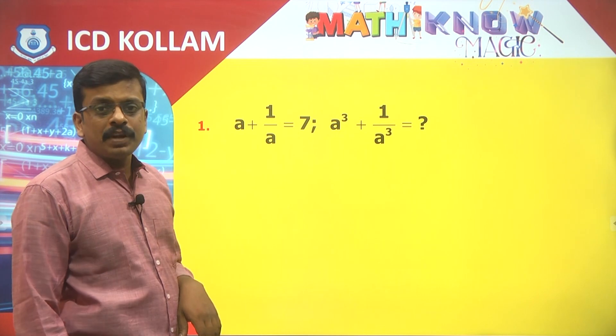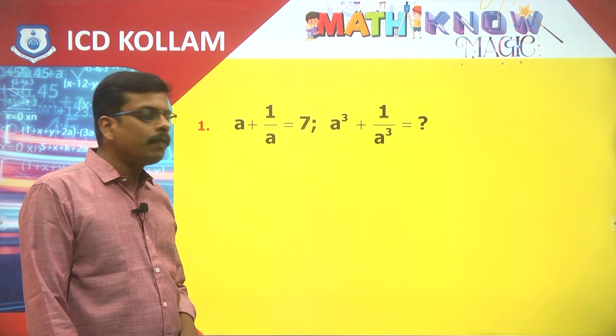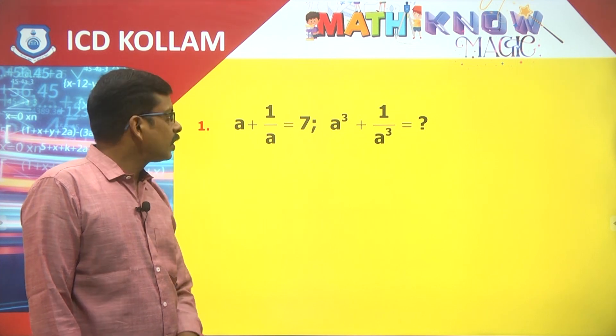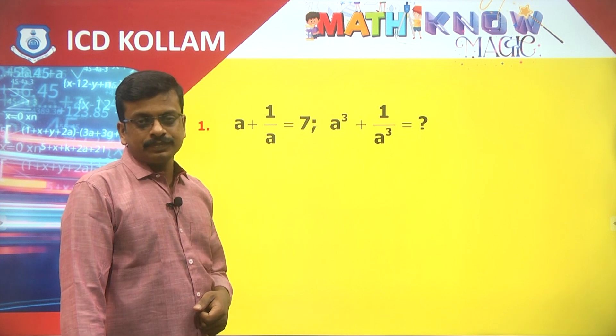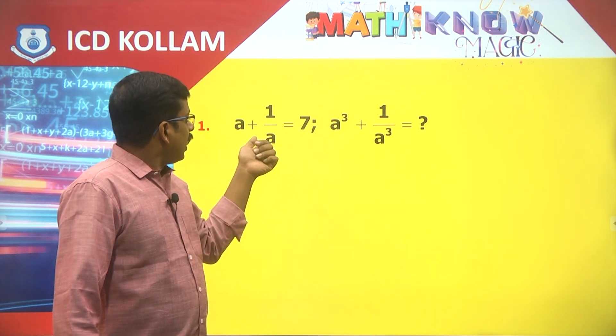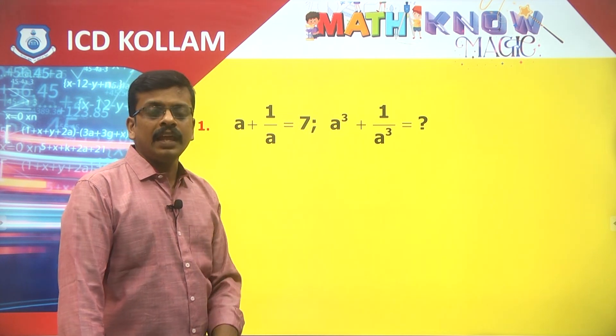Here, a plus 1 by a equal to 7, a cube plus 1 by a cube. Here a, here a cube similarly, 1 by a, 1 by a cube.